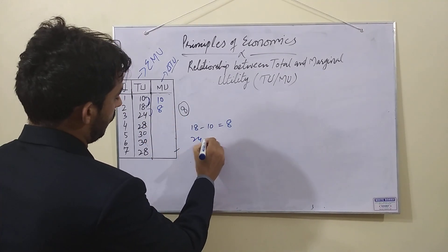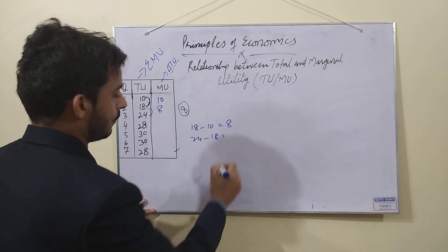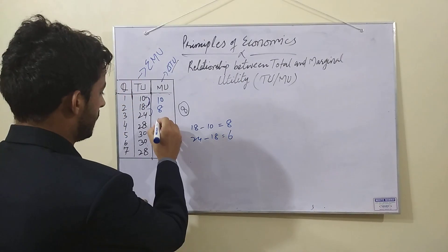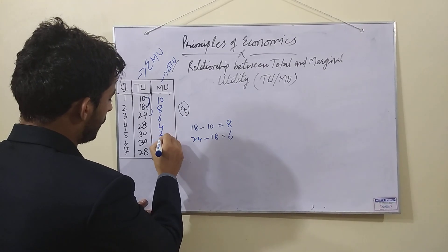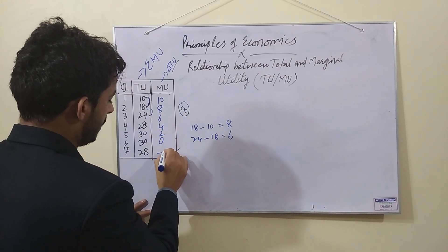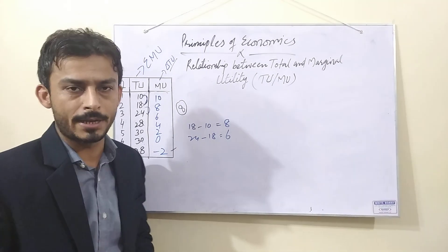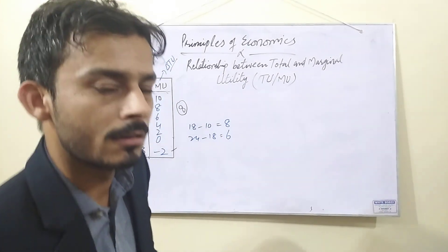Then, I have 24 minus 18. So, I get 6. So, you will calculate this and you will get marginal utility. This is quite easy.